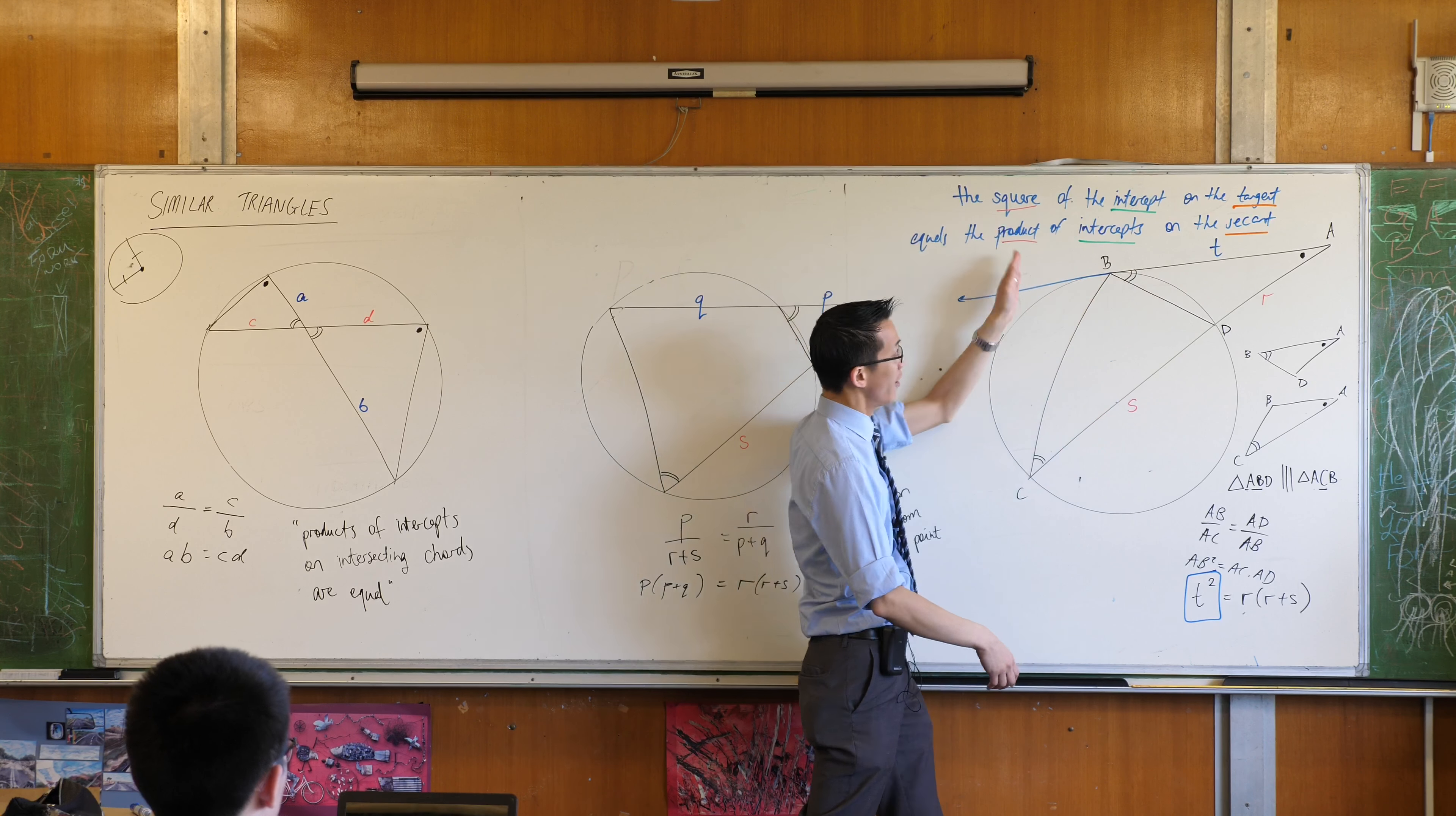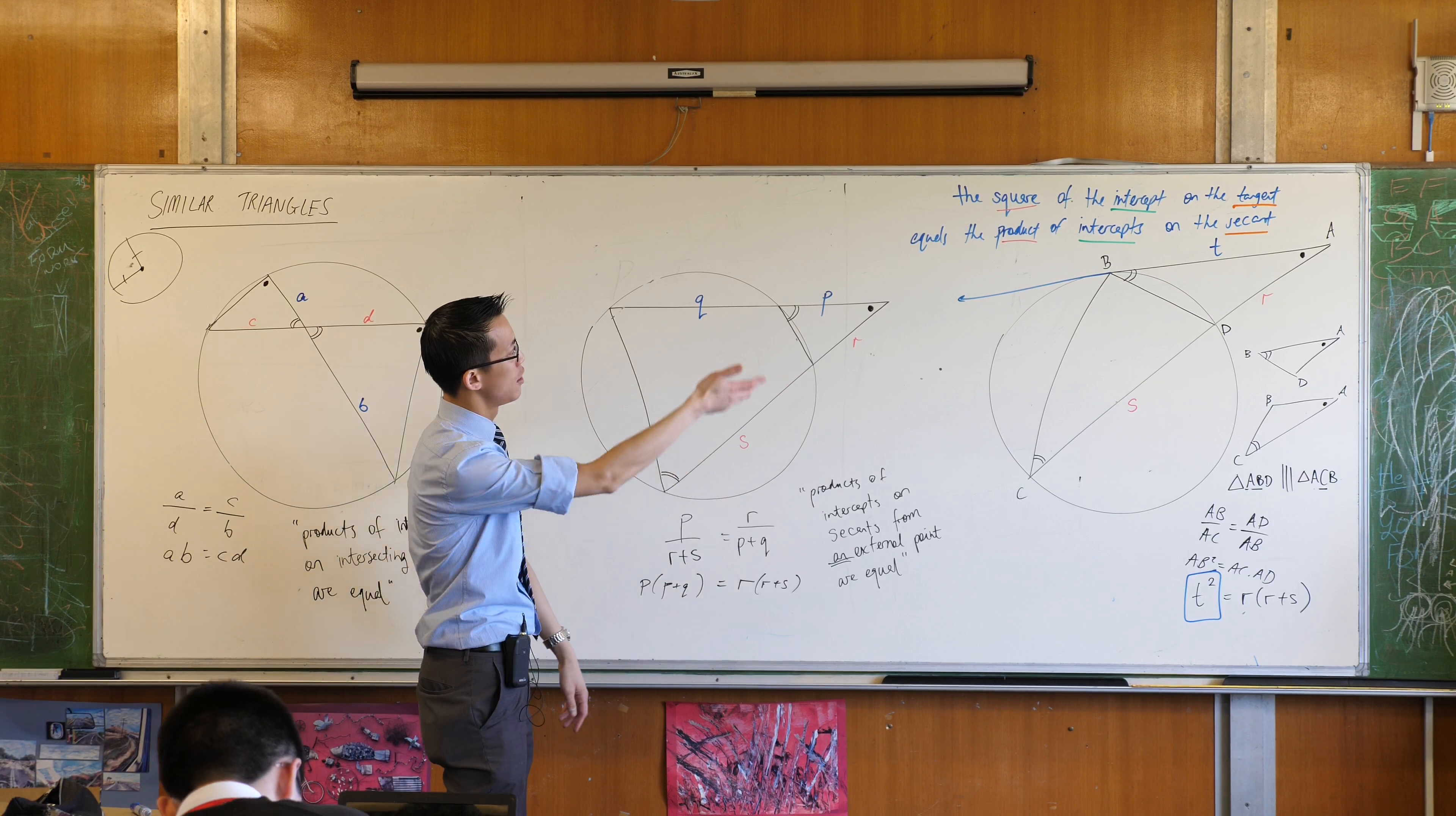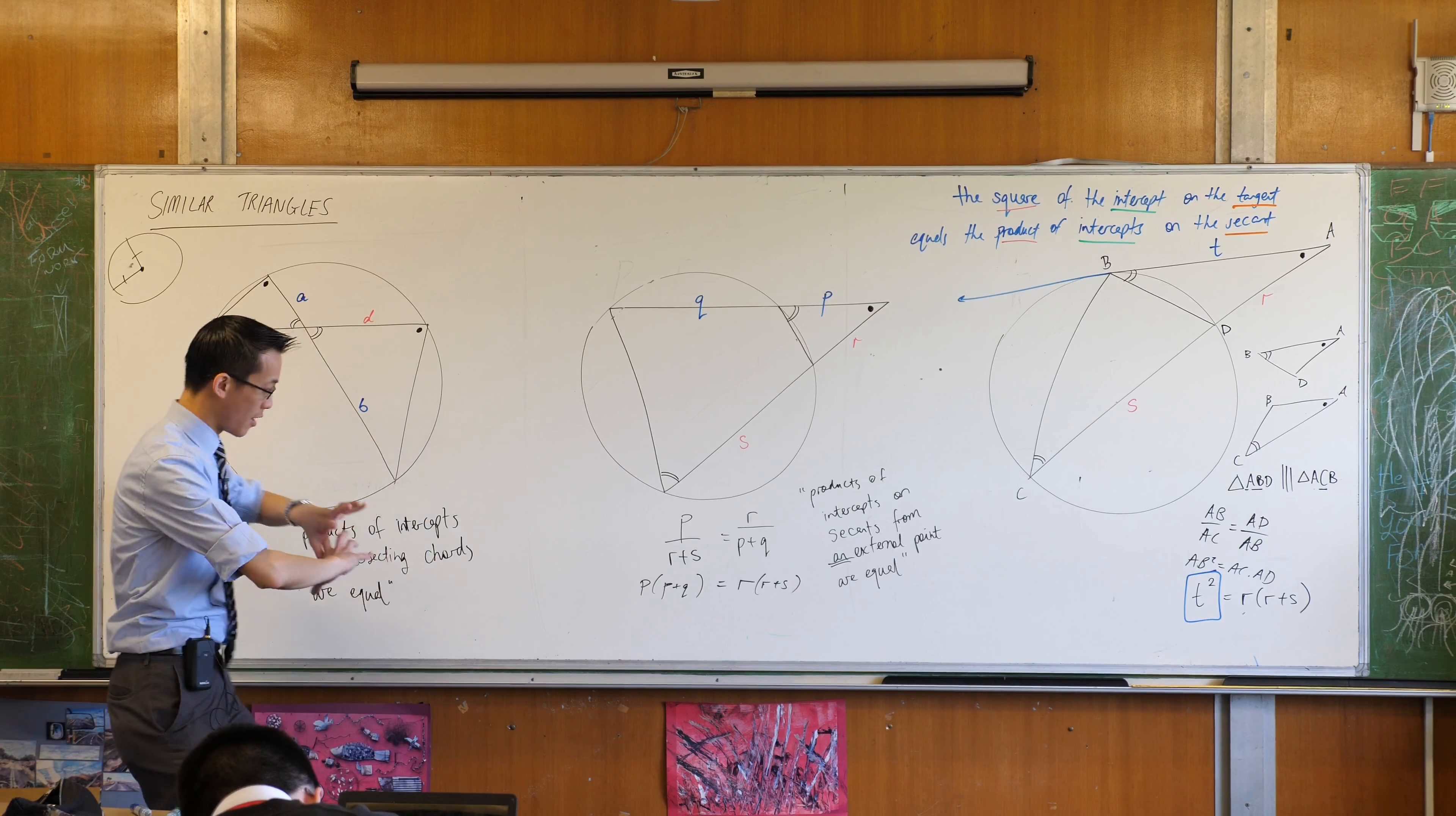That way you're really only remembering six words, two lots of three, as opposed to however many words that actually is, okay? So I'm showing them to you all together because they all marry up to similar triangles, okay? Any questions? Happy times?